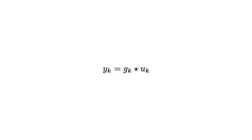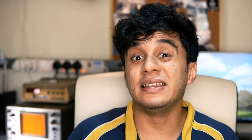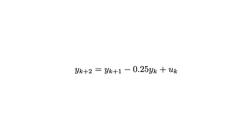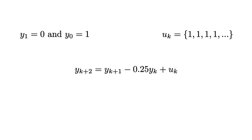The beauty of the Z-Transform is that I can turn this ugly convolution into multiplication in the Z domain: Y equals G times U. Now I want to end this video with an example — how to use Z-Transforms to solve difference equations. A linear difference equation is the discrete equivalent of a linear differential equation: your output is some function of previous inputs and outputs. Here is an example of a difference equation. Because it is second order (the highest index is Y sub k+2), we need two initial conditions: Y1 = 0 and Y0 = 1. The input is a unit step — a series of 1s going to infinity.